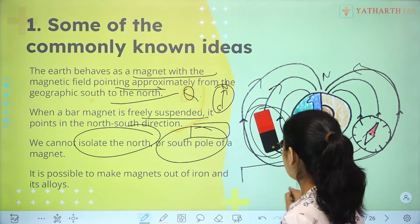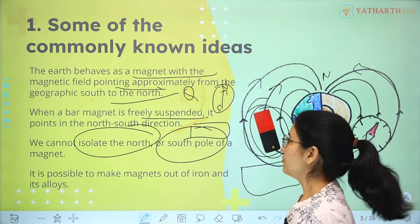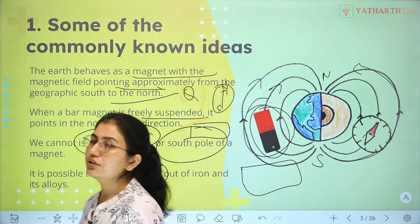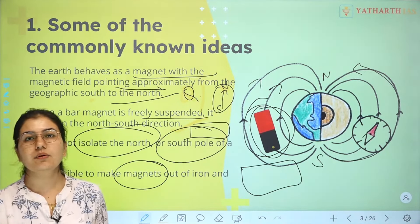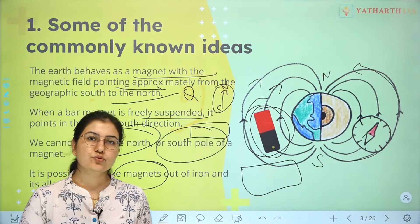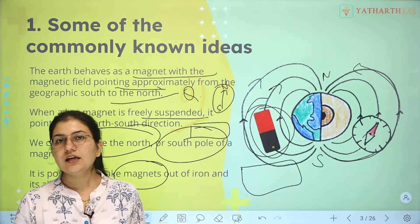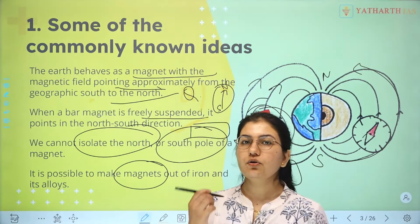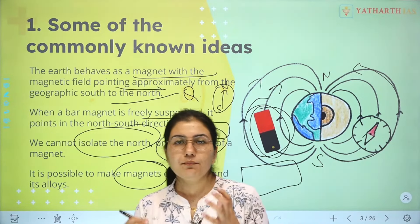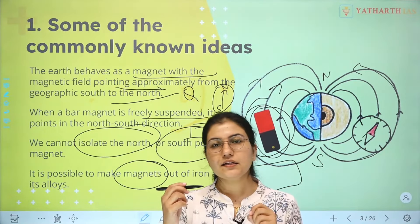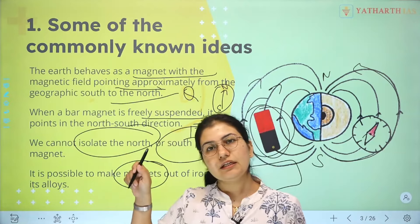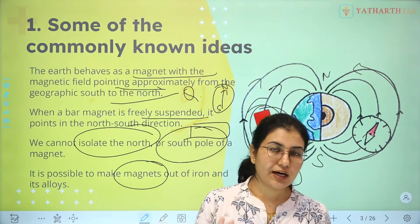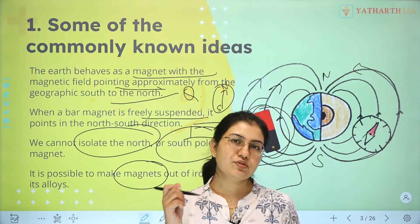A bar magnet is a particular bar-like or rod-like structure. It is possible to make artificial magnets. With the help of certain substances and mechanisms, we can create magnets — for example, even a metal iron rod can be made into a magnet using certain processes.